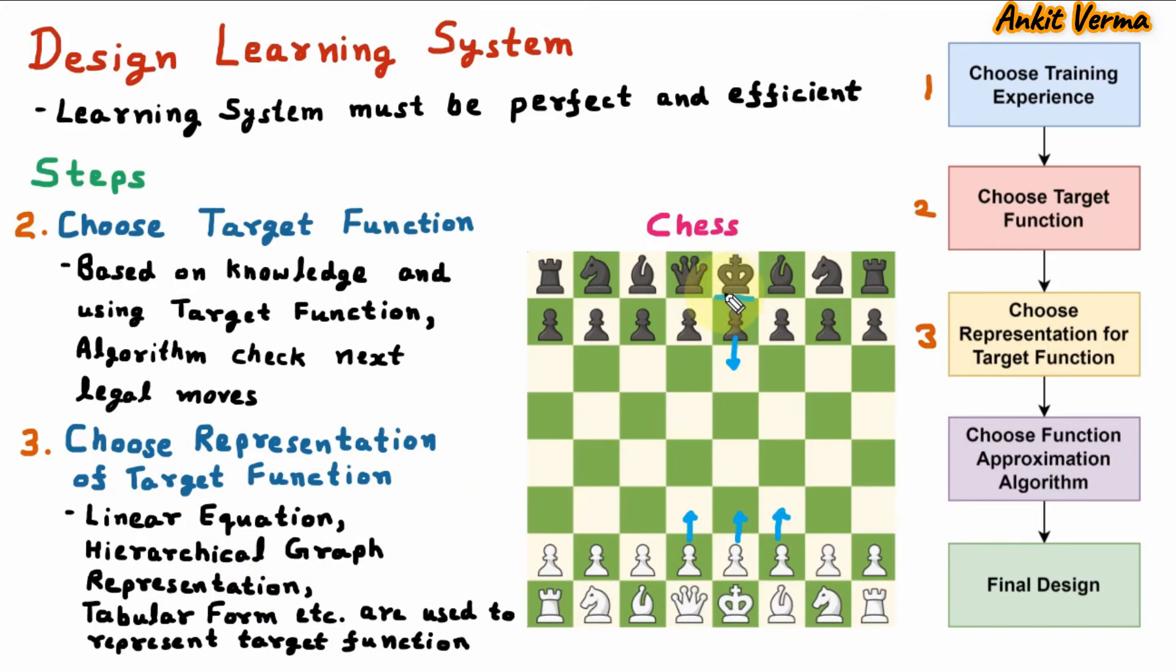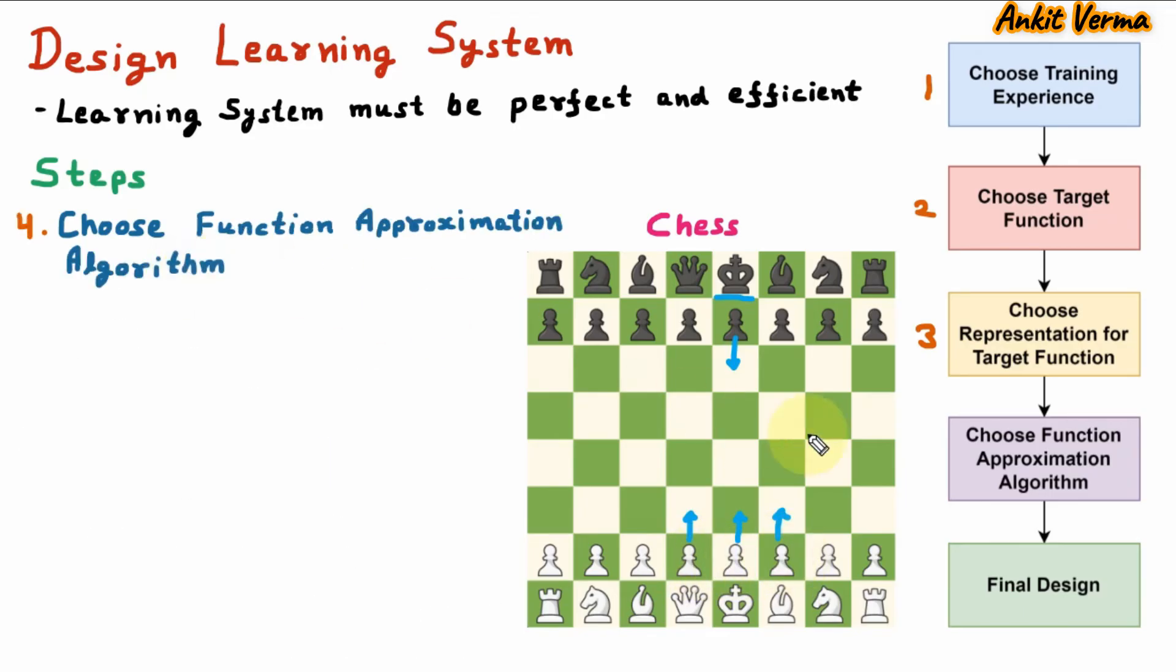And for that, we use some representation. And that representation can be in linear equation, hierarchical graph representation, or tabular form, or any other form. So using that, algorithm will decide that these are the different legal moves.